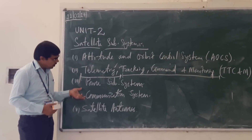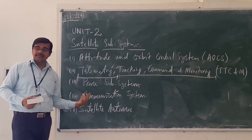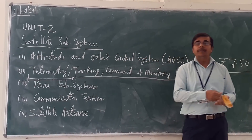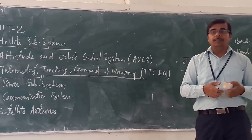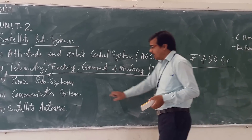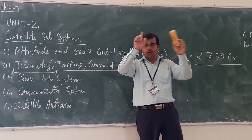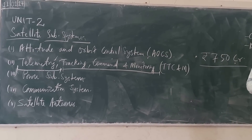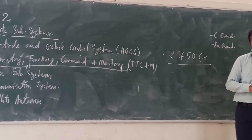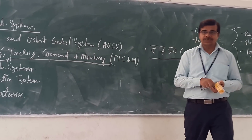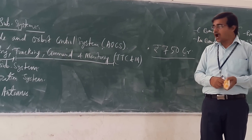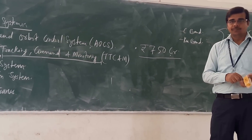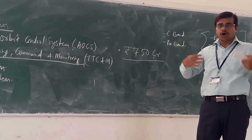The next block is your communication system. In your communication satellite, the communication system is the main block. If you consider how much space it is occupying in your communication satellite, it is just taking a part — hardly 10% of the space will be for your communication system. The remaining parts are just the supporting blocks.